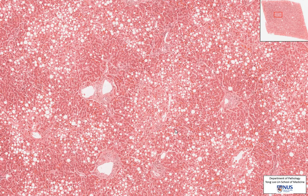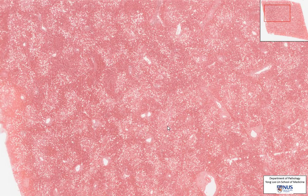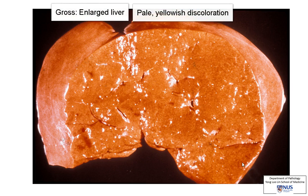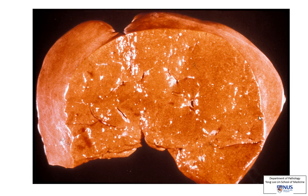I also want you to think about why this occurs in the centrilobular region, and how do you think this liver will look grossly. If there is a fatty change in most of the hepatocytes, what we will get is usually an enlarged liver, because you can also see how the lipid actually enlarges individual hepatocytes. We may also see a change in color, quite a diffuse sort of yellowish discoloration of the liver that is due to lipid accumulation.